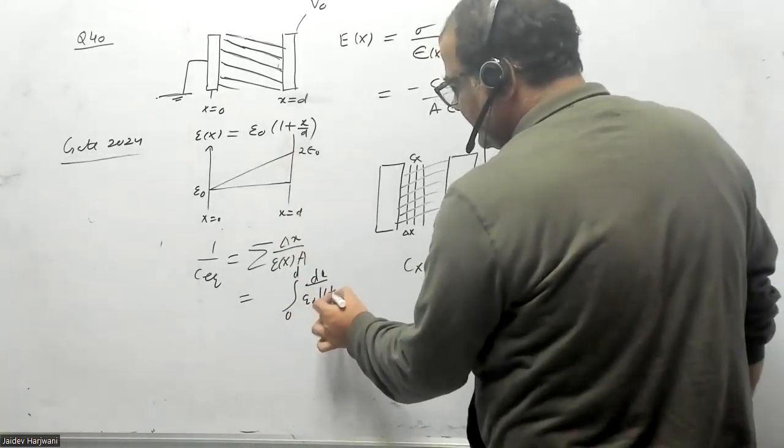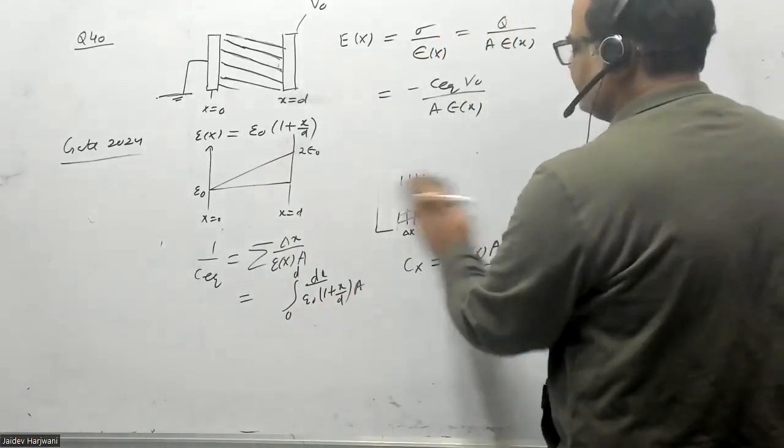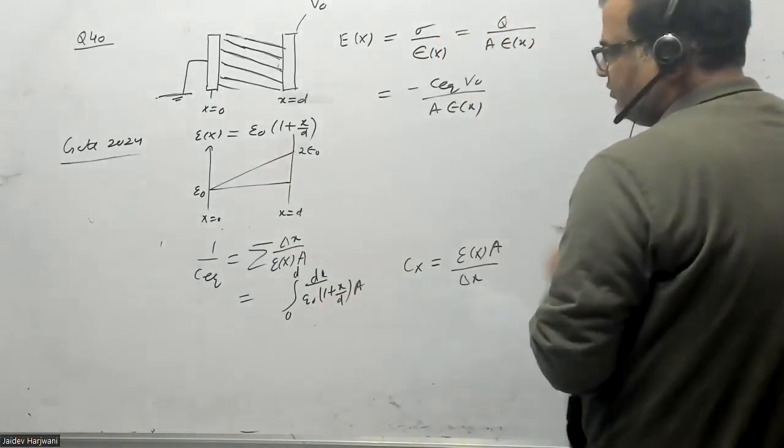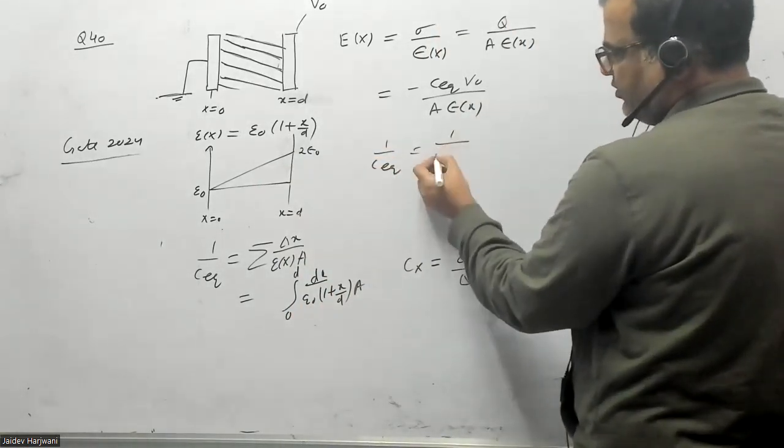I can write this as an integration where the limit X goes from 0 to D, and this delta becomes dX. The ε(X) value is given as ε naught times (1 plus X by D) into A. So let us find the value now.